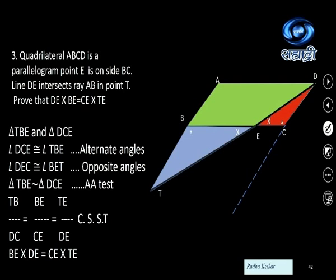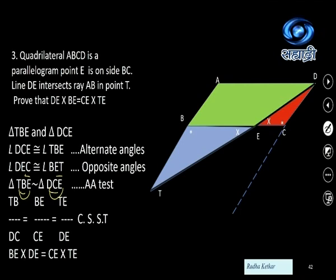Since the triangles are similar, corresponding sides are in proportion (CSST). The ratios are TB upon DC, BE upon CE, and TE upon DE. To get the required result DE × BE = CE × TE, we cross multiply using the second and third ratios: BE upon CE equals TE upon DE, giving BE × DE = CE × TE. This proves the required statement.